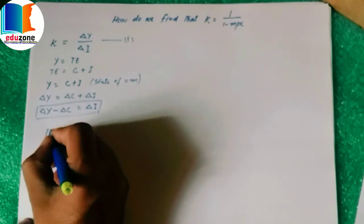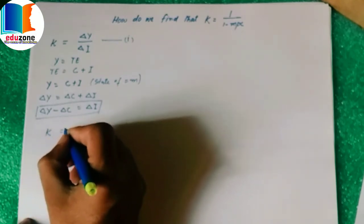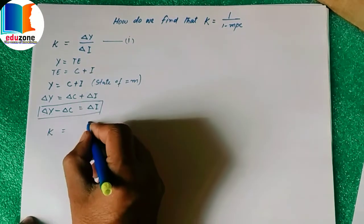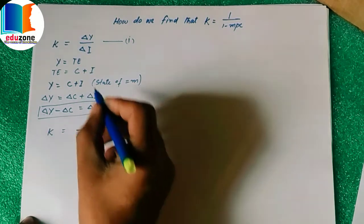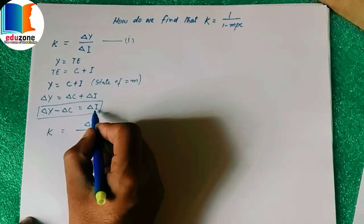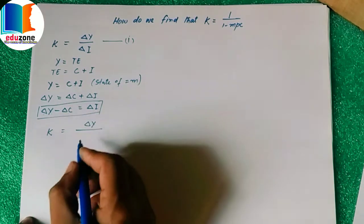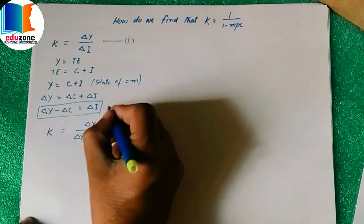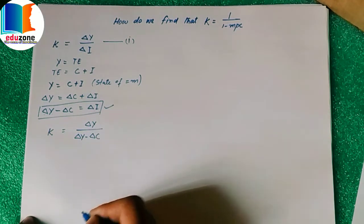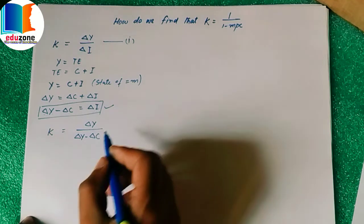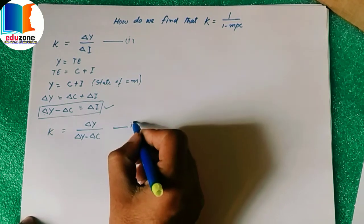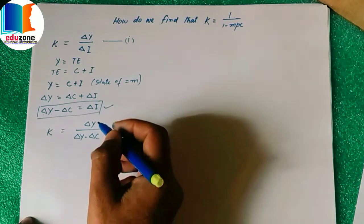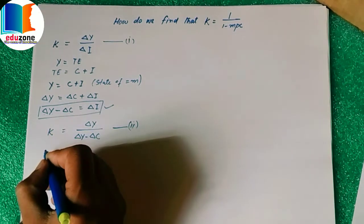Now substituting this value into equation one, we can write K = ΔY / ΔI, where the value of ΔI is ΔY − ΔC as found here. So K = ΔY / (ΔY − ΔC).